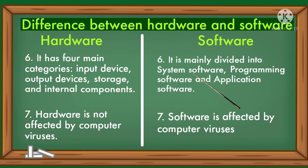Software is mainly divided into system software, programming software, and application software. Hardware is not affected by computer viruses, whereas software is affected by computer viruses.